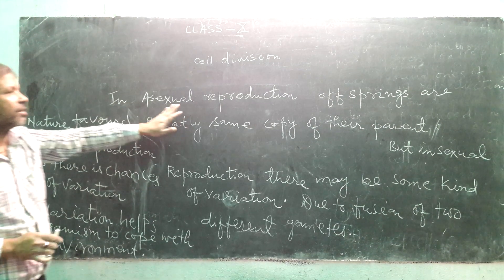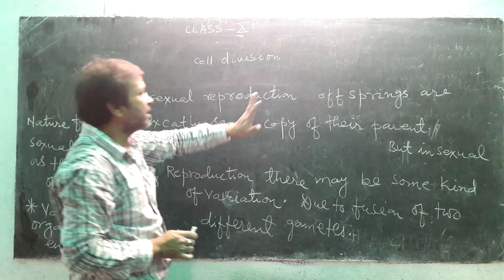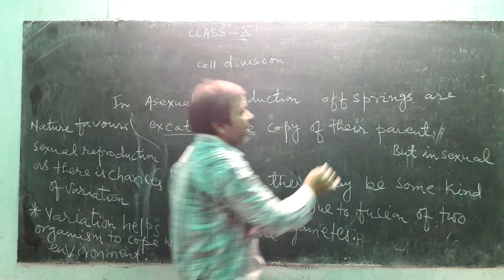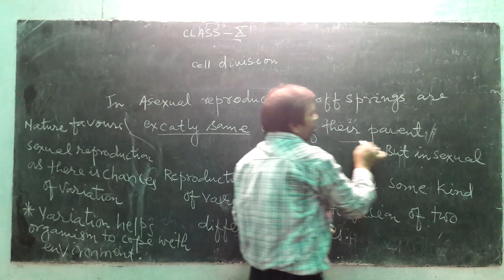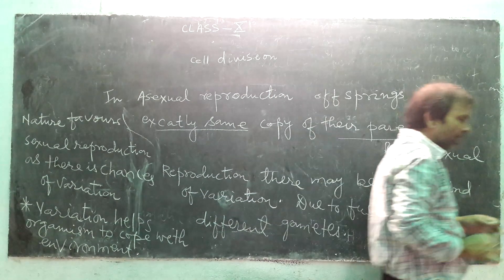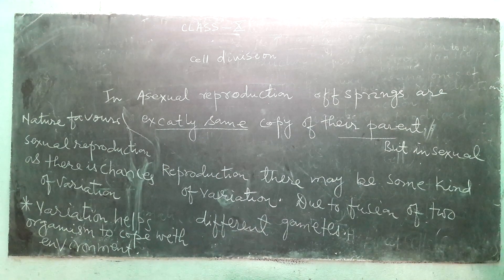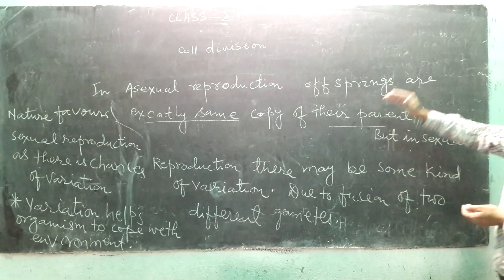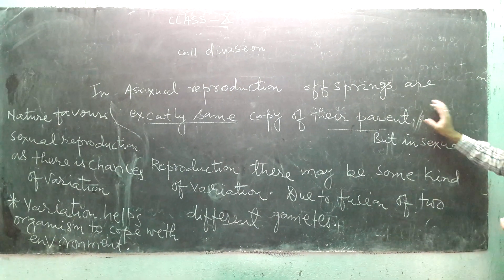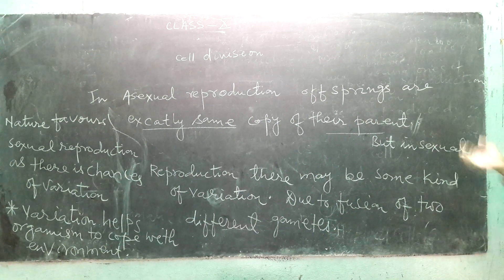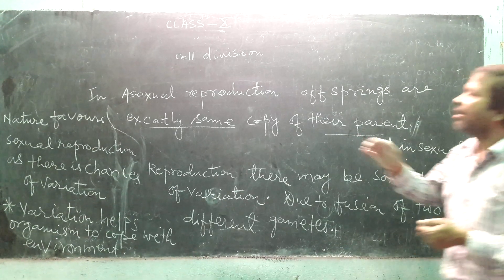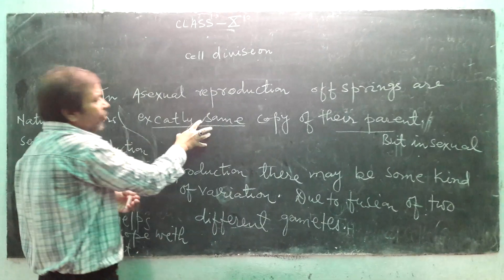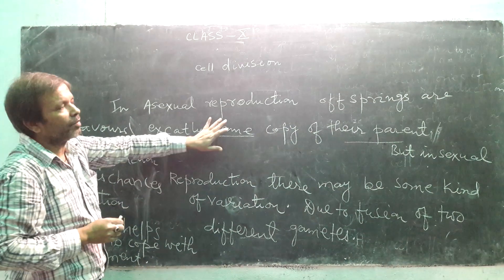In asexual reproduction, offspring are exactly the same copy of their parents. This means the characters that the parents have are completely transferred to the offspring. The characters of the parents are transferred to the offspring exactly.